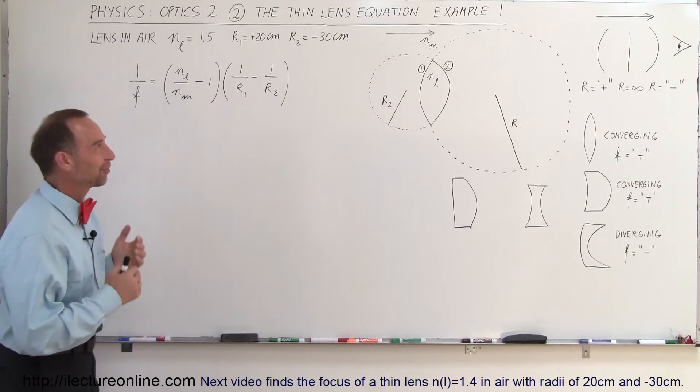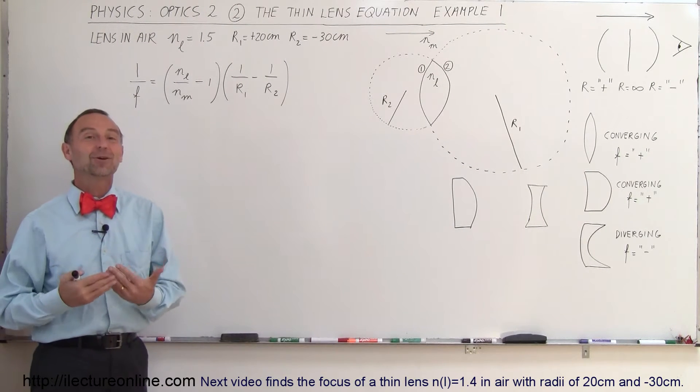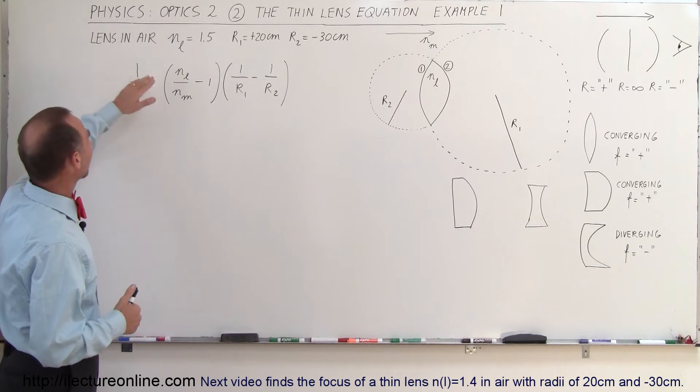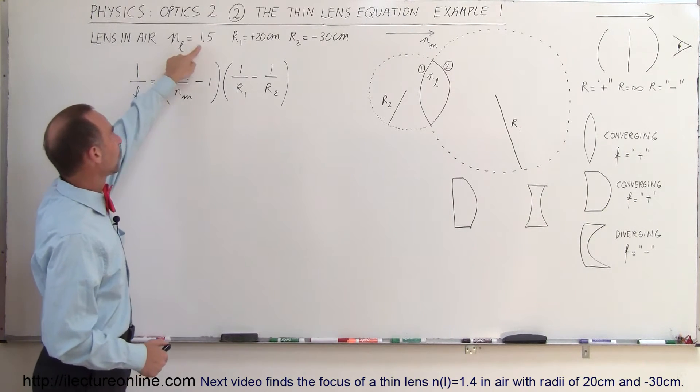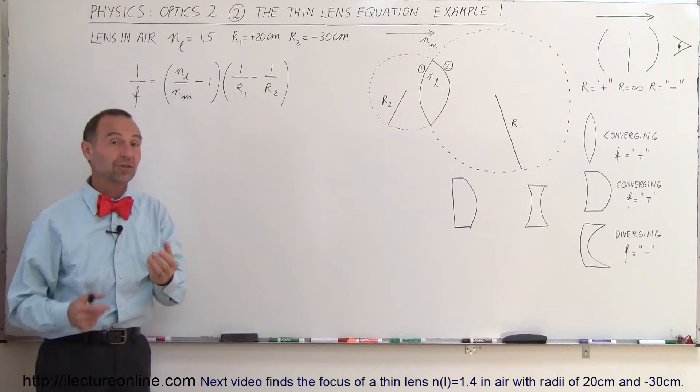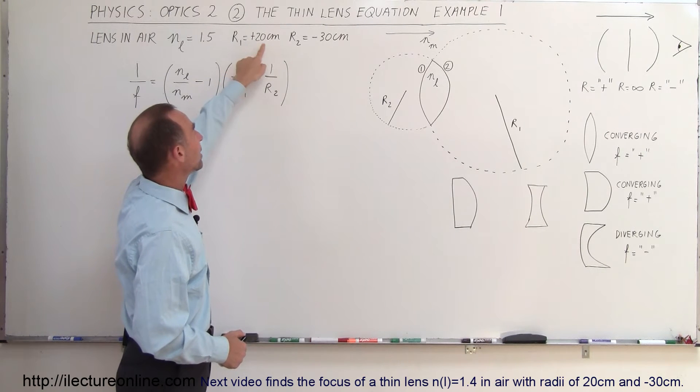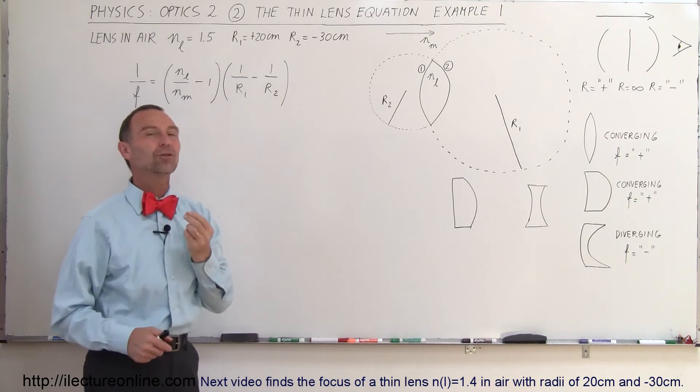Welcome to iLectureOnline, and here's our first example of how to use the thin lens equation. The lens that we have has an index of refraction of 1.5. It is in air, which means the index of refraction of the medium is 1. The front radius is 20 centimeters and the back radius is minus 30 centimeters.